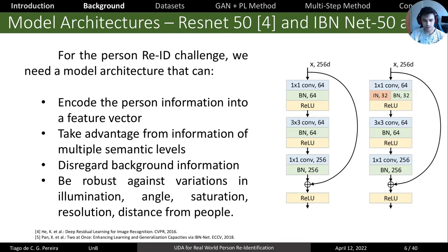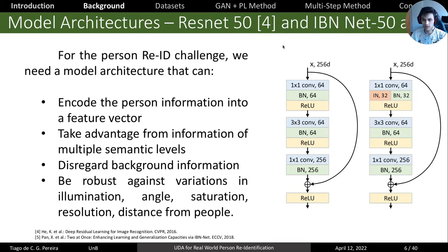We also want to disregard background information and focus only on the person. We started with ResNet-50, then changed to IBN-Net-50A, because it is important to be robust against variations in illumination, angle, and saturation when adapting to new camera viewpoints. The key difference between IBN-Net and classical ResNet is the instance normalization block, which helps the network become robust against these variations. That is why we upgraded from ResNet to IBN-Net in further steps.